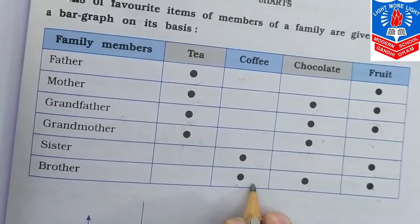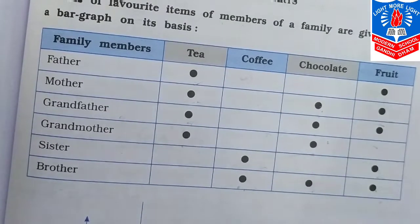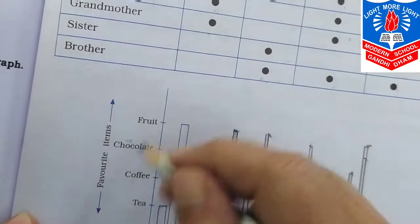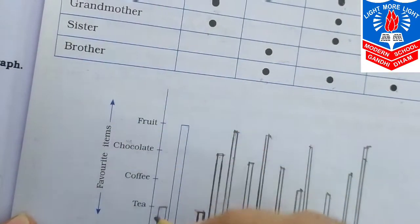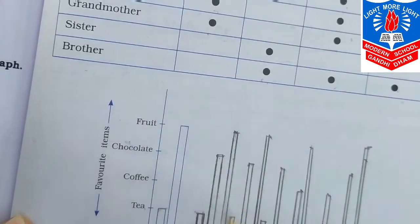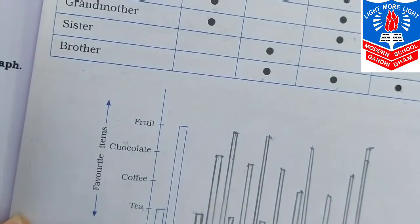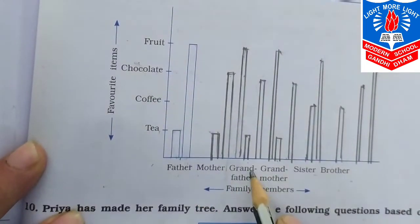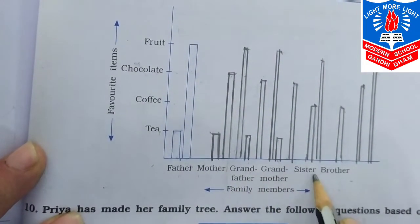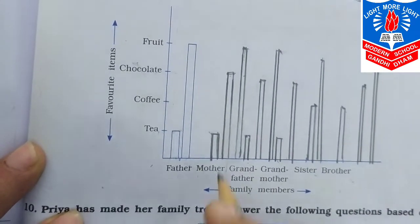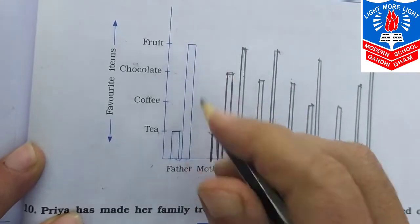In this bar graph, on one side the favorite items — tea, coffee, chocolate and fruit — are mentioned. And on the other side the names of family members — father, mother, grandfather, grandmother, sister and brother — are given. The first entry is already drawn here.